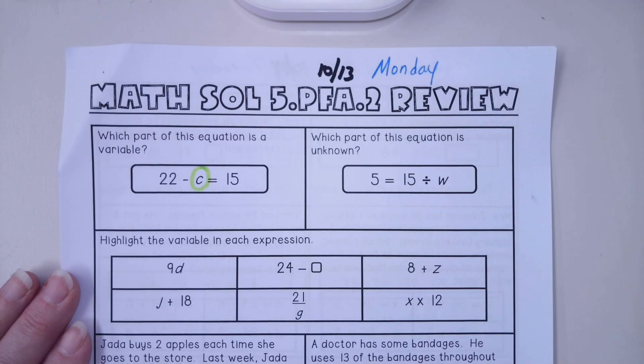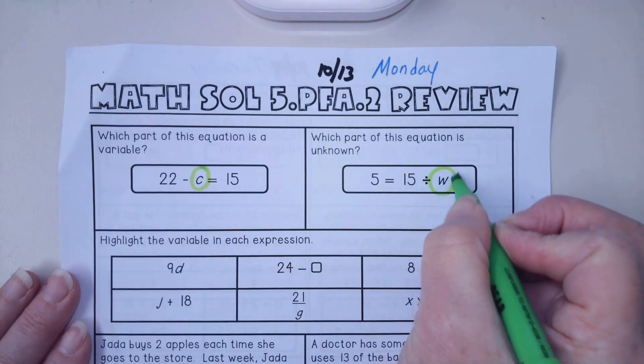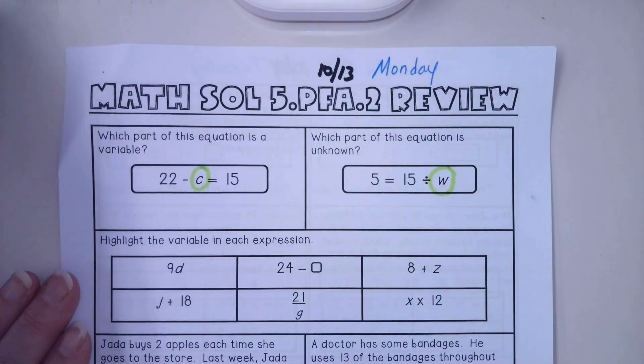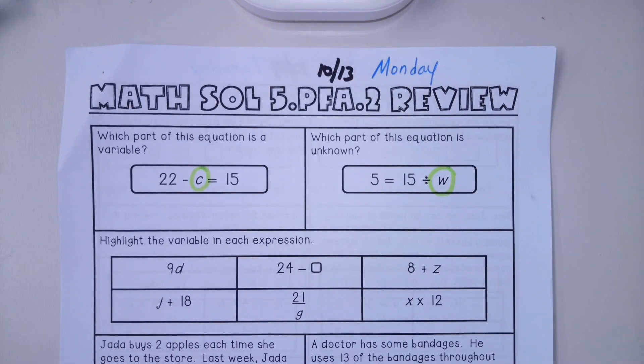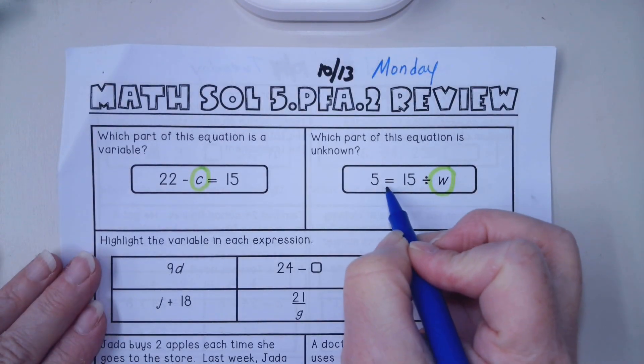Let's look at number two. Which part of this equation is unknown? Again, it is a variable. This equation has the equal sign in a different location, so please make sure you're aware of that.